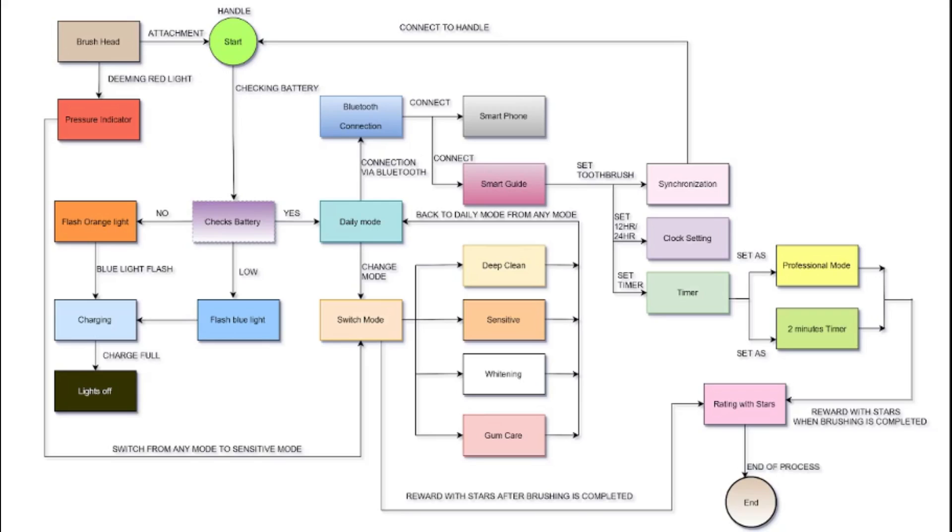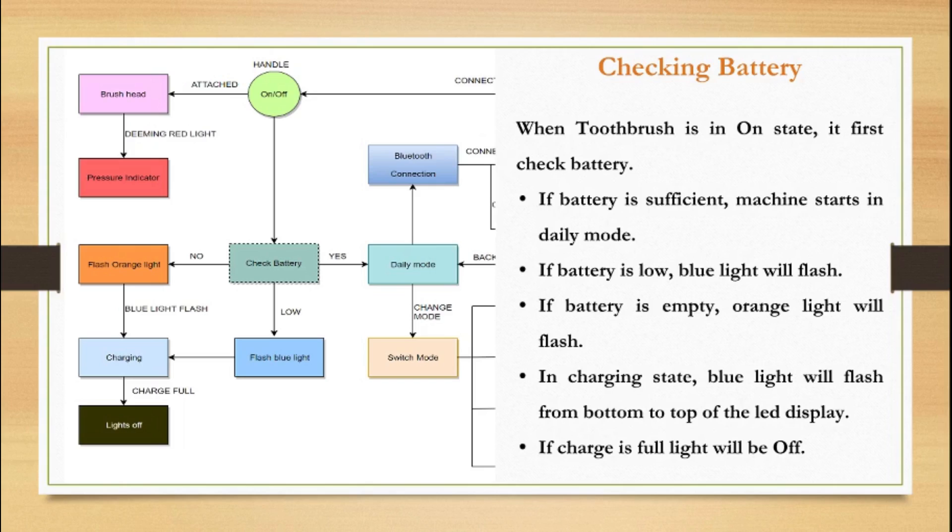This is how the state transition diagram of the Oral-B toothbrush looks like. Starting with the ON state, it first checks the battery level. If battery is sufficient, the machine starts in daily mode.